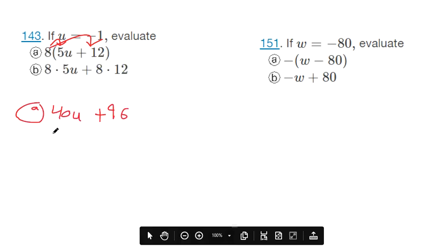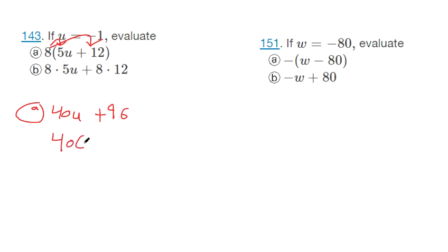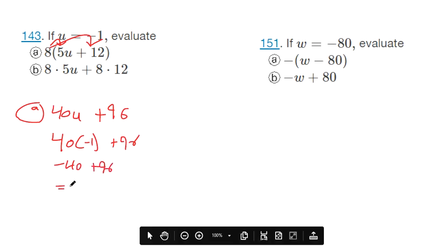And then we can plug in U. So it gives us negative 40 plus 96 which equals 56.